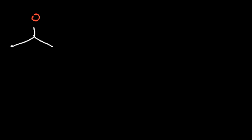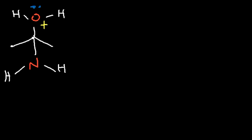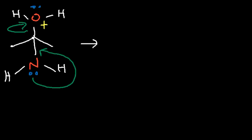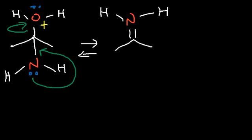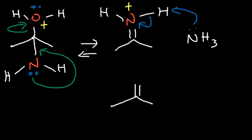We now have an oxygen with two hydrogen atoms attached, giving it three bonds, one lone pair, and a positive charge — making it a good leaving group. Nitrogen uses its lone pair to form a double bond, kicking out H2O. All of these steps are reversible. This gives an iminium ion where nitrogen carries a positive charge. Ammonia then comes in and removes a hydrogen, producing the imine.